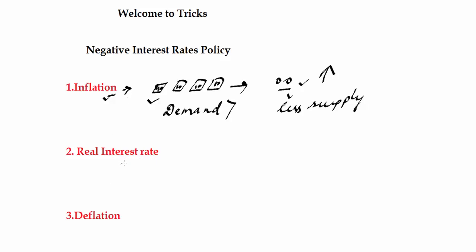Next is real interest rate. Interest rates are the rates at which borrowing and lending takes place. When you deposit your money in the bank, you get some interest. When you borrow money, you pay some interest. So what is real interest rate? During inflation, consider that you borrow rupees 100 and you will have to pay rupees 10 as interest on that money.